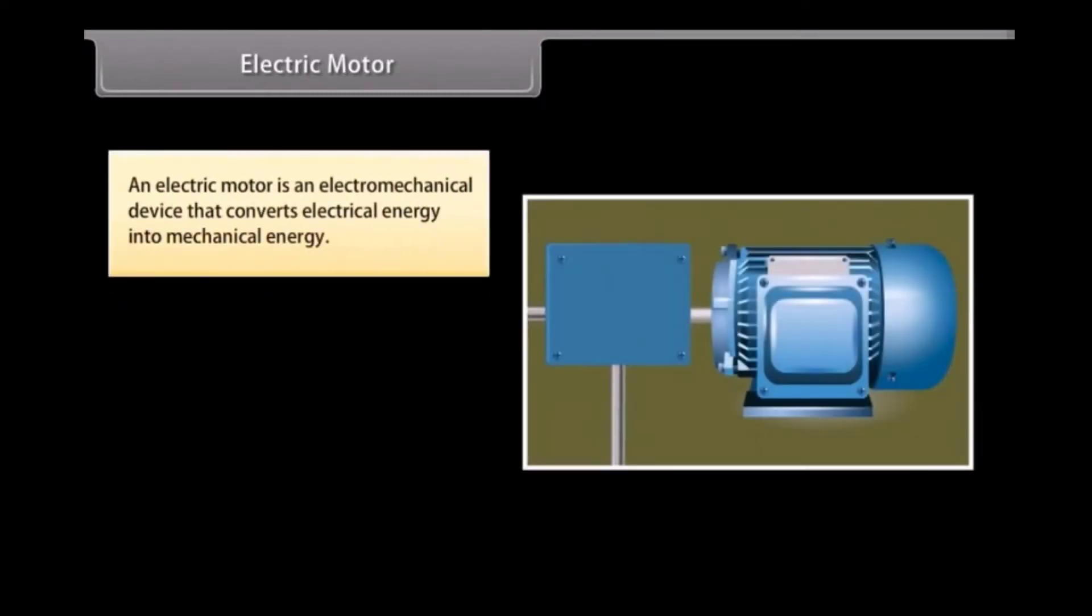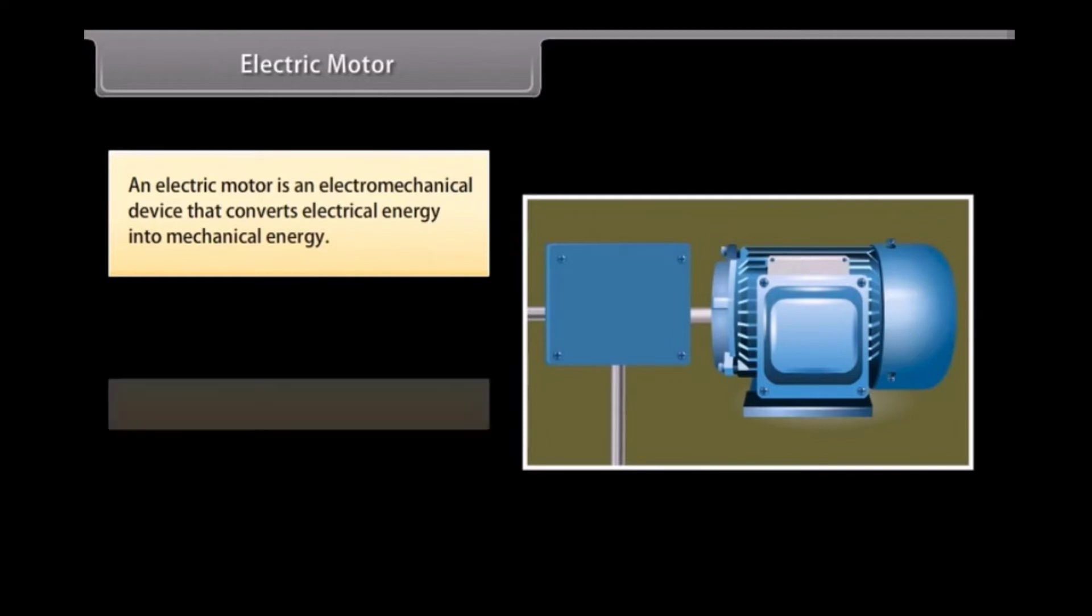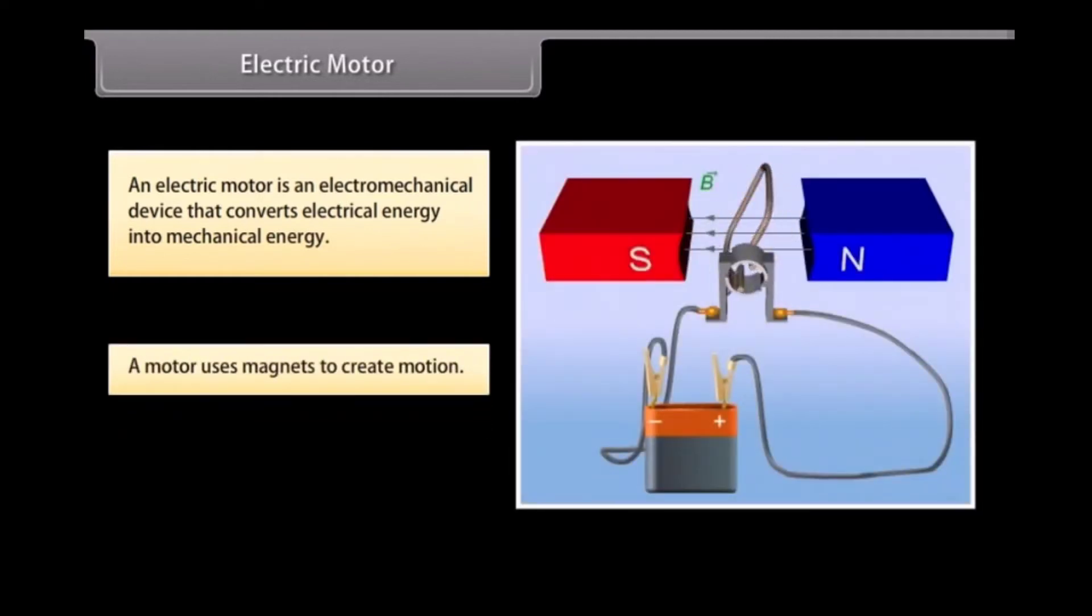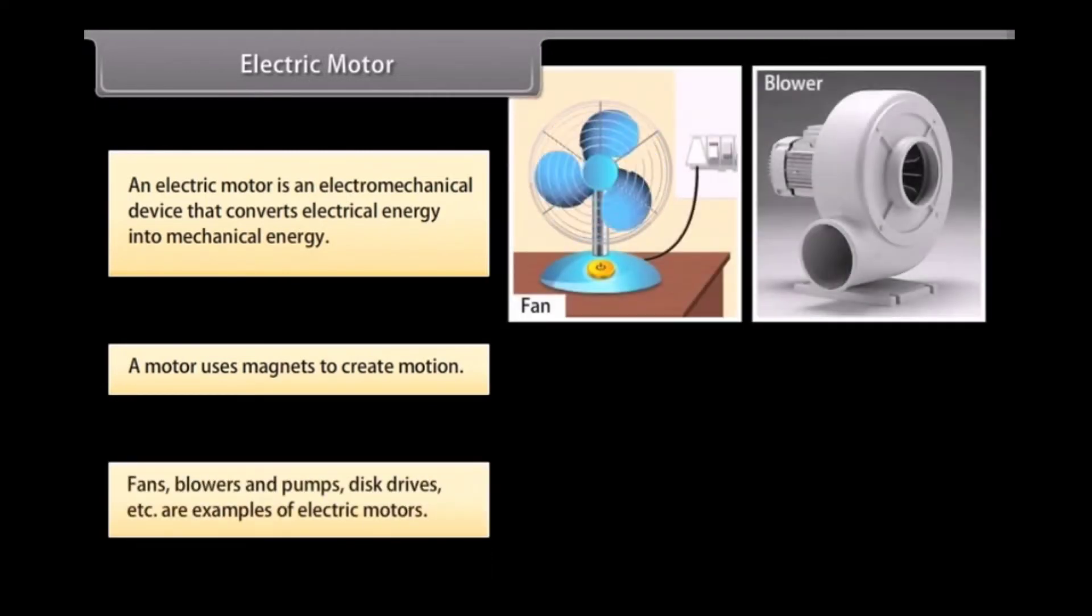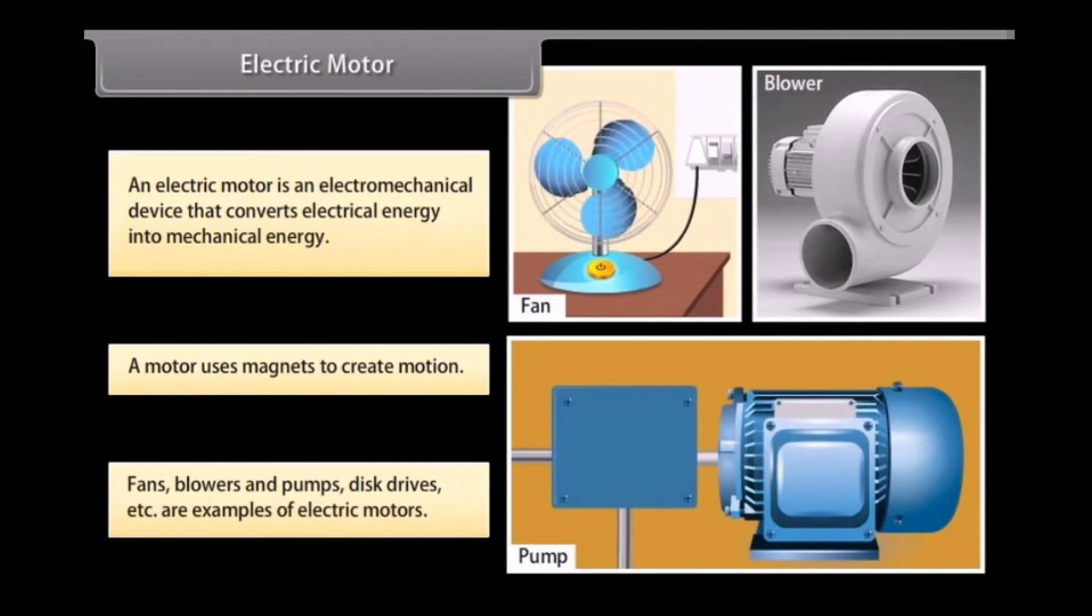Electric motor. An electric motor is an electromagnetical device. It converts electrical energy into mechanical energy. Let us look at how electric motors work. A motor uses magnets to create motion. Inside an electric motor, the attracting and repelling forces of a magnet create rotational motion. Fans, blowers, and pumps, disc drivers, etc. are some examples of electric motors.